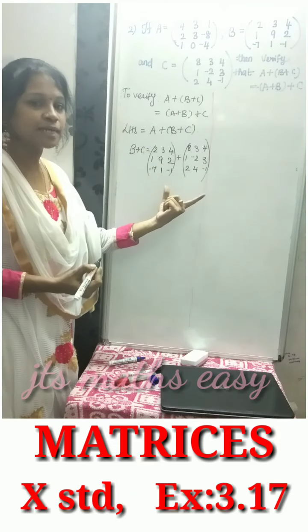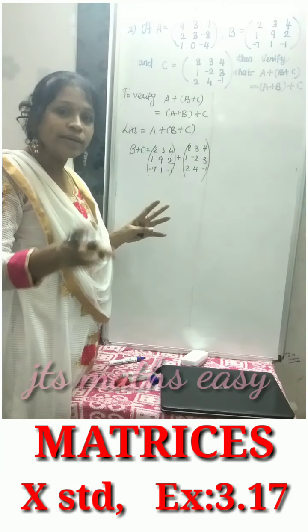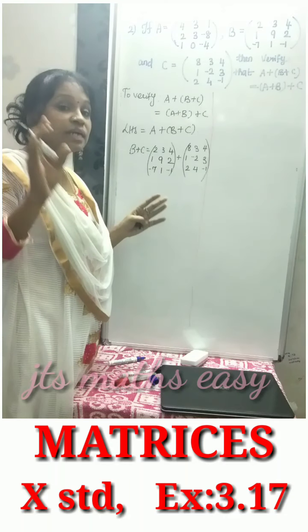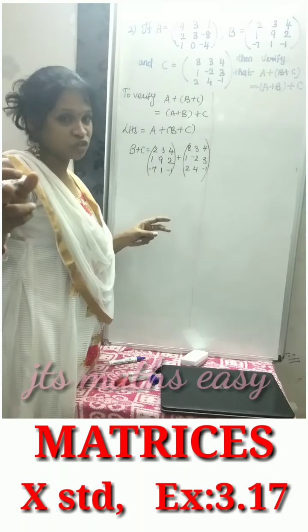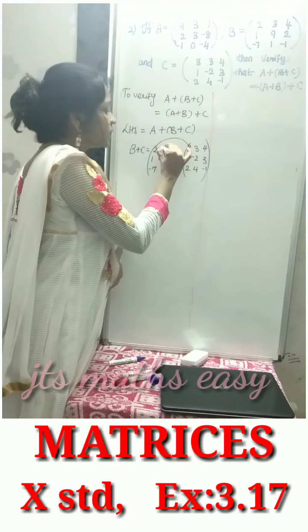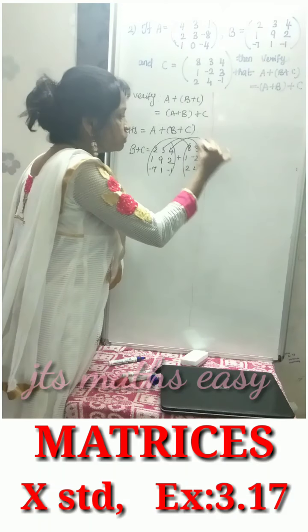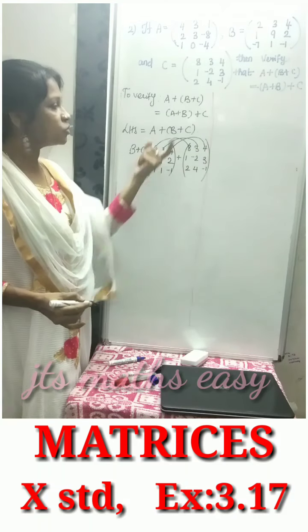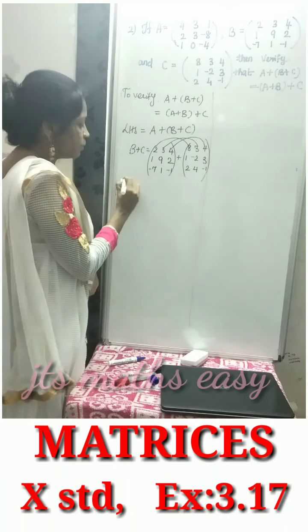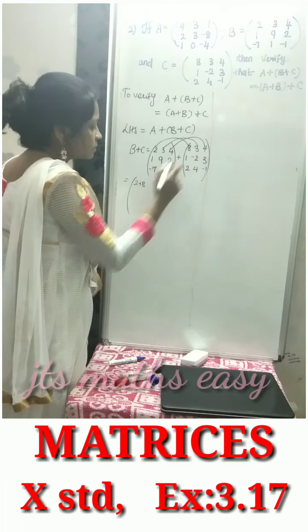To add two matrices, the order must be the same. When the order is the same, we can add them. We add corresponding positions: first position with first position, second with second, third with third. Apply this for all remaining rows. So add 2 plus 8, 3 plus 3, 4 plus 4.